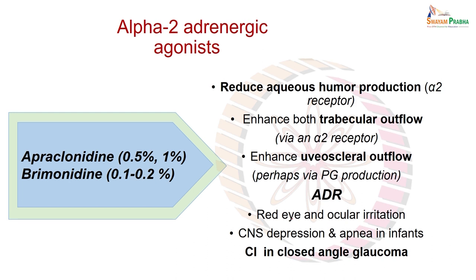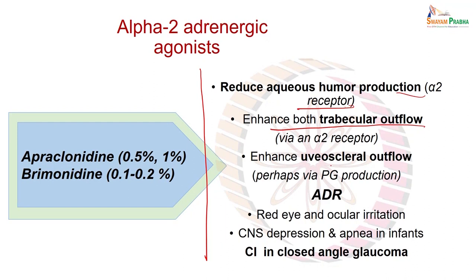Among adrenergic drugs, alpha-2 adrenergic drugs are also used in glaucoma. The mechanism is that they reduce aqueous humor production through alpha-2 receptors and also enhance trabecular outflow via alpha-2 receptors.